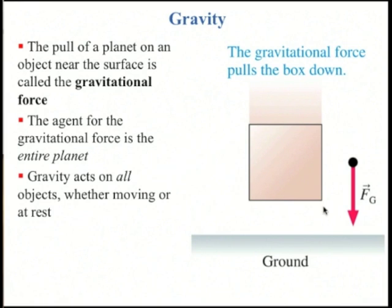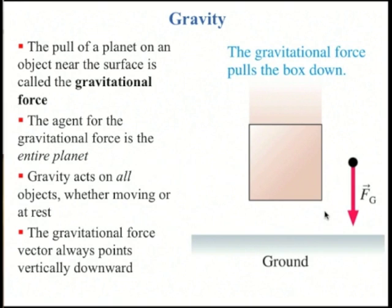Gravity acts on all objects near the surface of the planet, whether they're moving or at rest, and it always points downward. In fact, here on earth that's how we define the direction 'down' — it is the direction that gravity pulls.